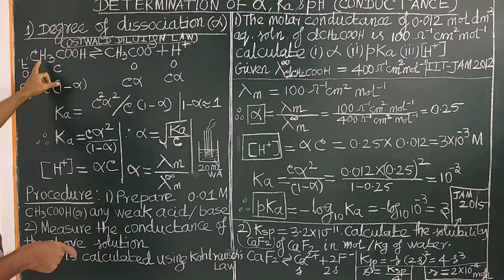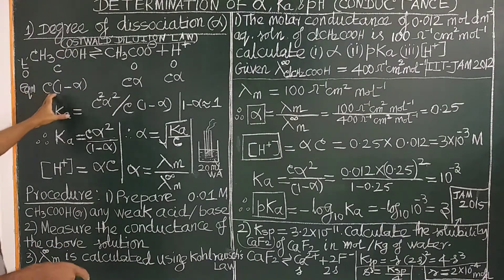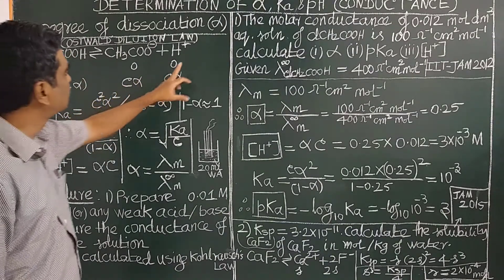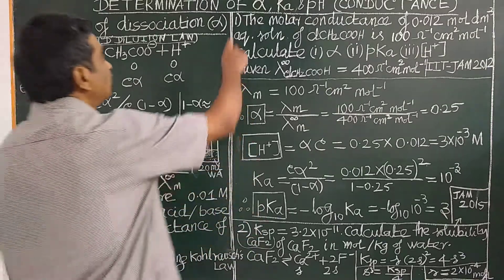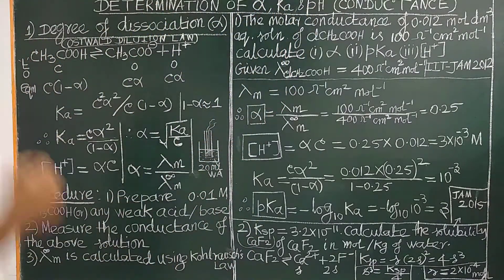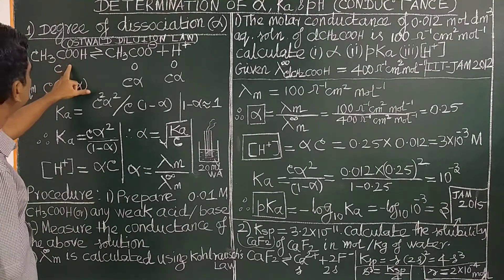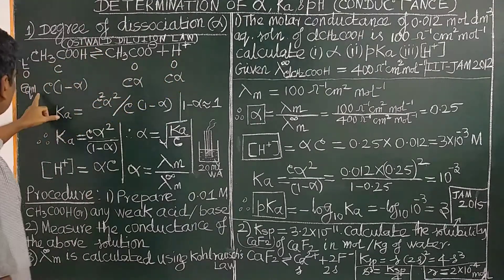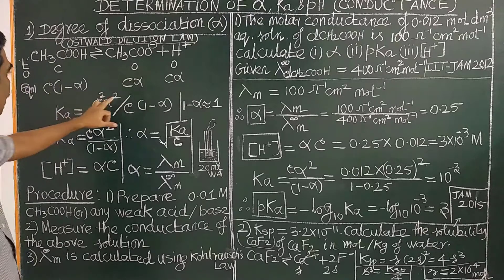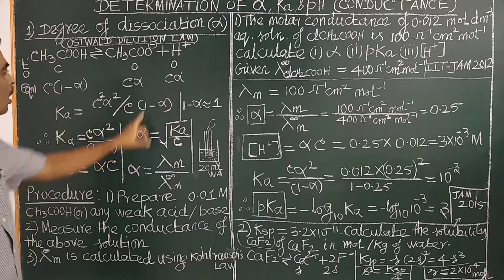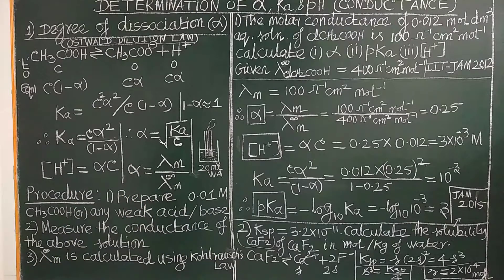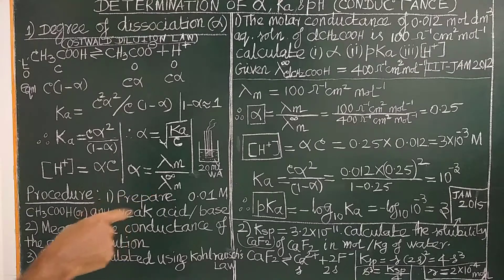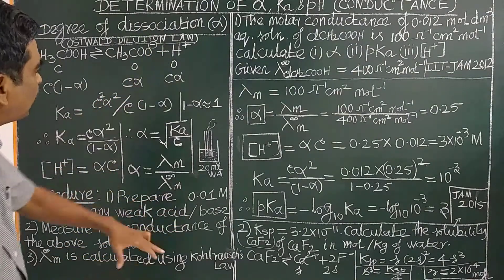The concentration of H⁺ is Cα. Using the concentration of H⁺, the pH can be calculated from alpha. For a weak base like ammonium hydroxide (NH₄OH ⇌ NH₄⁺ + OH⁻), the OH⁻ concentration is Cα. Using the ionic product of water, Kw = 10⁻¹⁴, H⁺ can be determined.